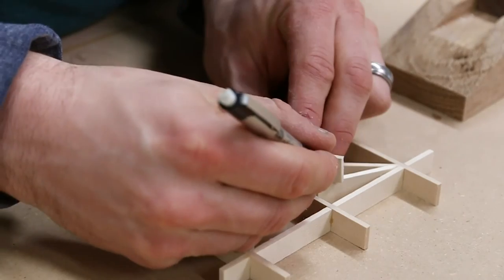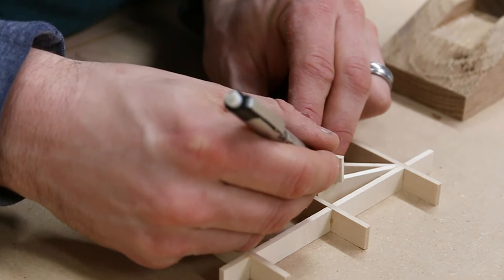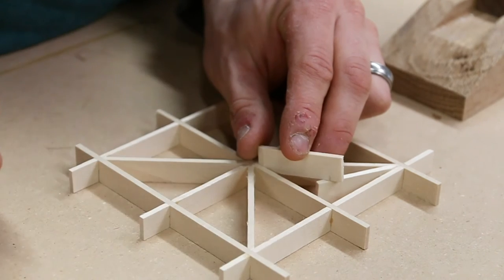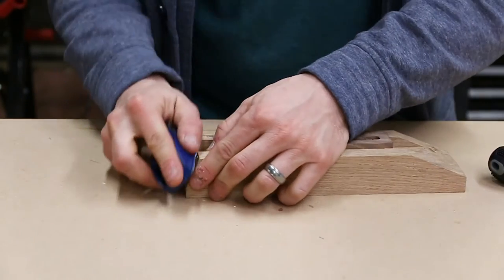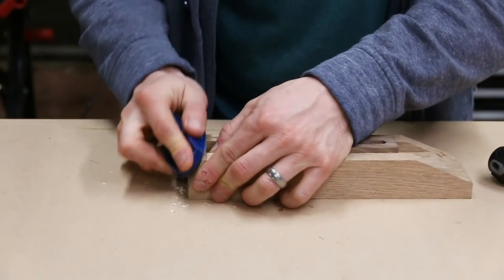For the opposite end of the hinge, I mark the rough length, about one eighth of an inch longer than it needs to be, and carefully cut a 67.5 degree bevel on two of the hinges. I want these two hinges to meet without any gaps.